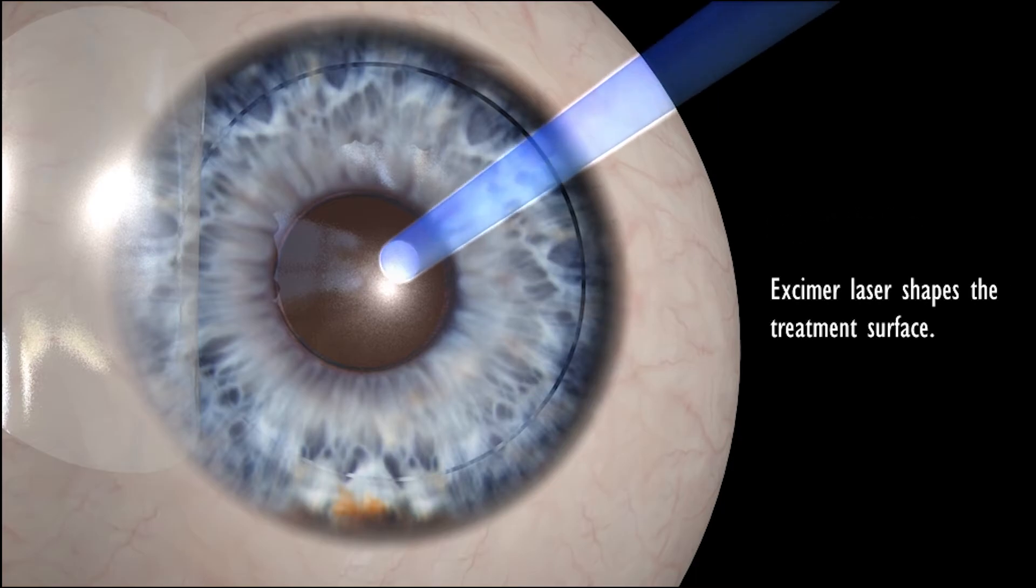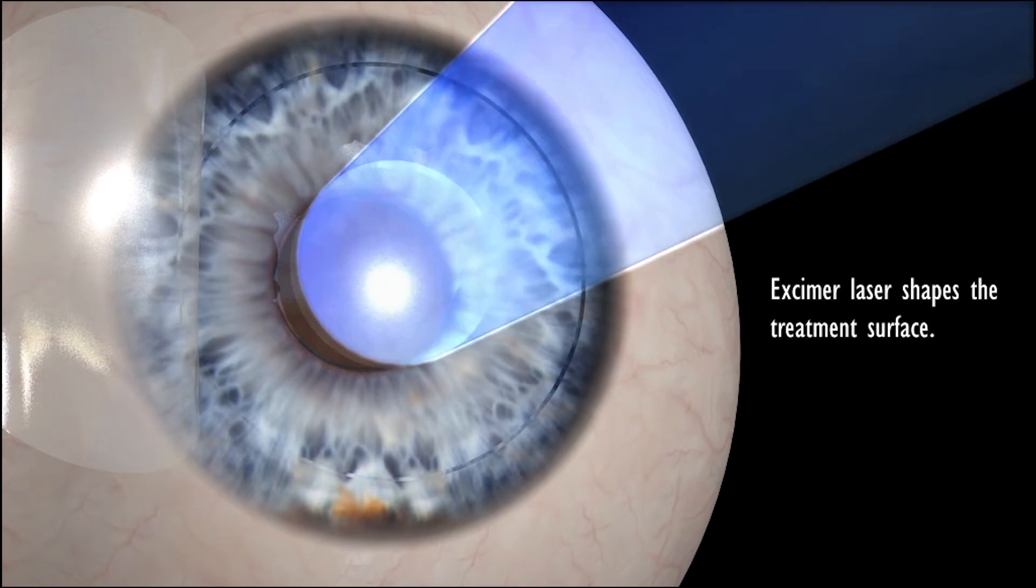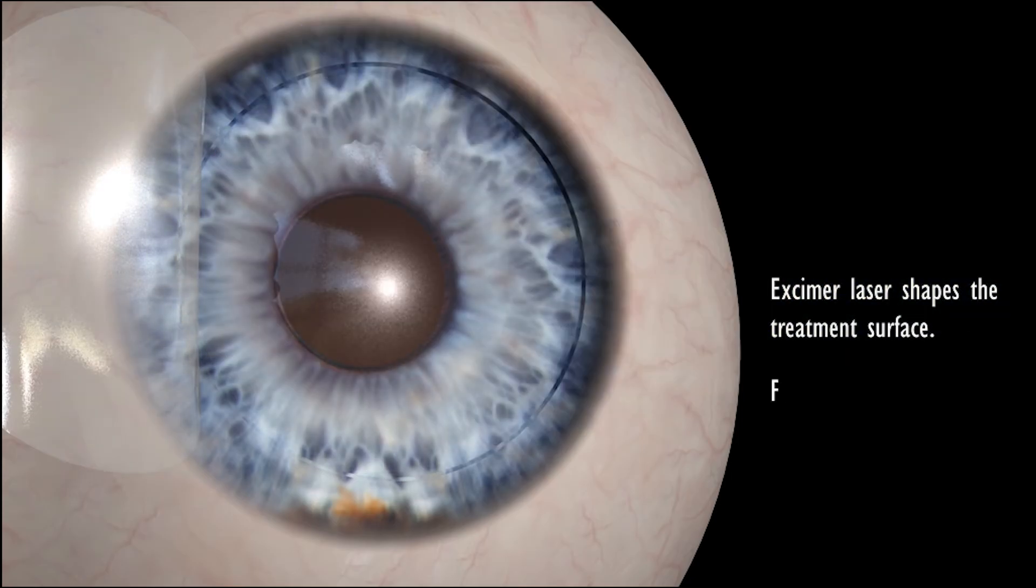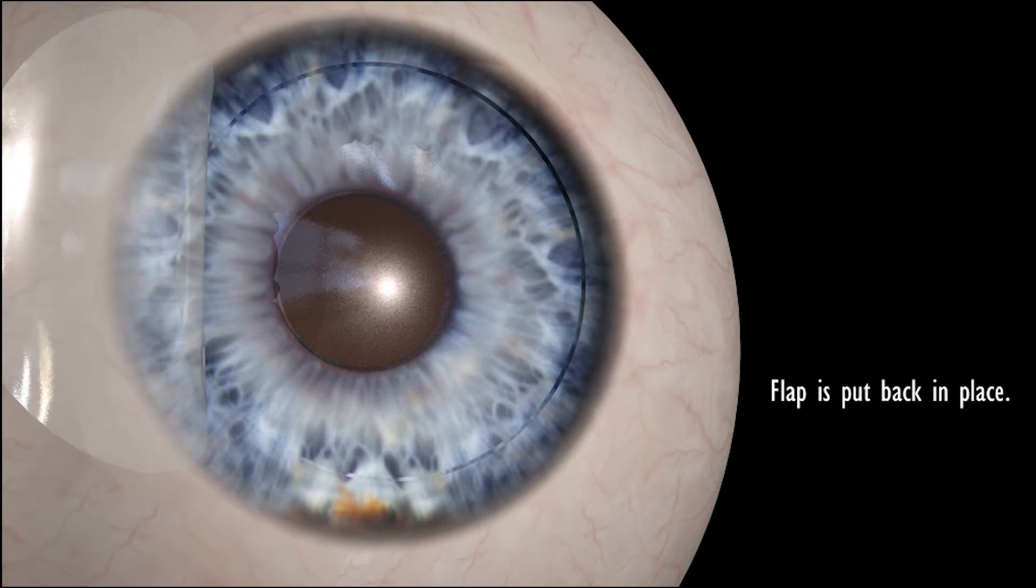Now a second laser, an excimer laser, performs the actual correction of the cornea. It reshapes the curvature of the cornea to the desired refraction.